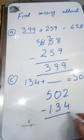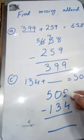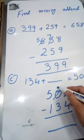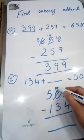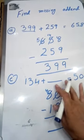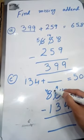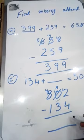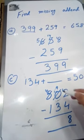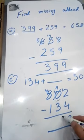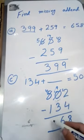12 minus 4 is 8. 9 minus 3 is 6. And 4 minus 1 is 3. So our answer here is 368.